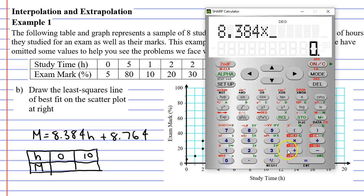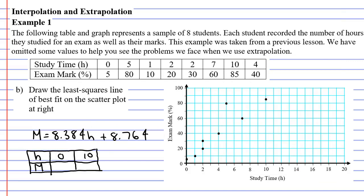The equation starts with 8.384 times H which is 0 in this case. So times 0 plus 8.764. And this comes out to 8.764.